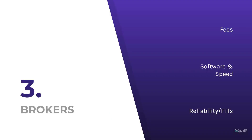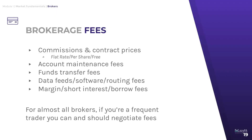Having covered the four different ways people make money in the markets, let's talk about what you should consider when selecting a broker. I want to focus this discussion in three main areas: fees, software and speed, and the broker's reliability and fills or order execution. In terms of fees, the two you might already be familiar with are commissions and contract prices — the fees brokers charge you for trading stock and trading options contracts. It's worth noting that with the advent of brokers like Robinhood offering commission-free trading, a lot of brokers have now eliminated their commissions or lowered them significantly.